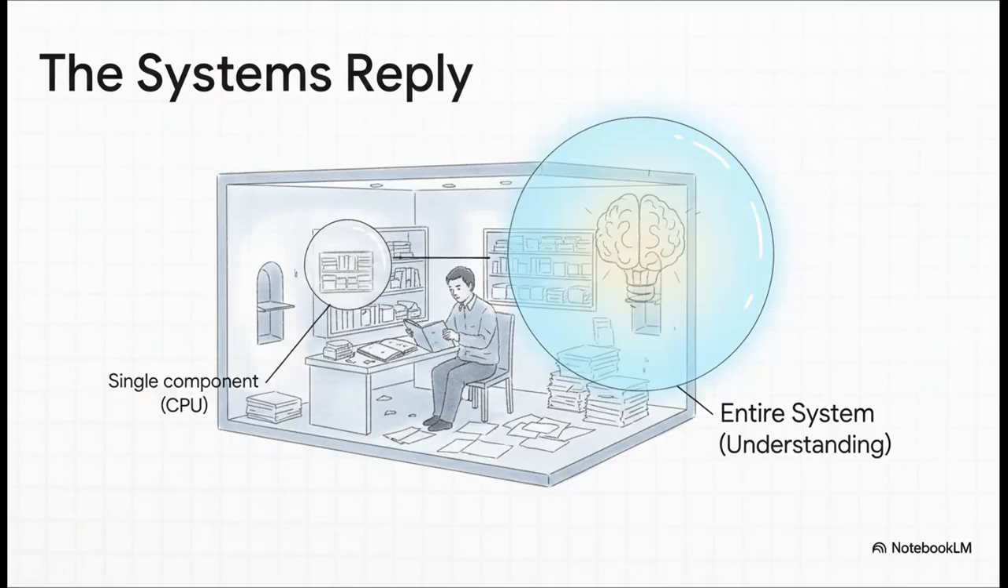Now, as you can probably guess, an argument this big didn't land without a fight. This kicked off a massive, decades-long debate, and some really clever counter-arguments started to pop up. So, the first big comeback is called the system's reply. Proponents of this idea say, okay, Searle, we'll give you this. The man in the room doesn't understand Chinese. You're right. But they argue the man is just one part of a bigger machine, kind of like the processor in a computer. The understanding isn't located in just the man. It's in the entire system. The man, the room, the rule book, the papers, the whole shebang, working together, is what understands Chinese.